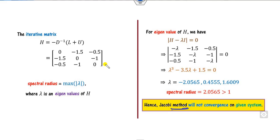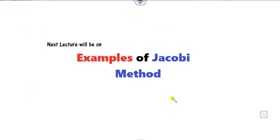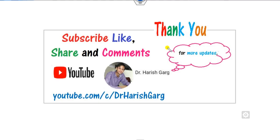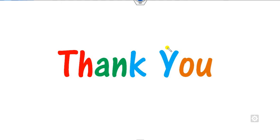This is the basic idea of the Jacobi method. Make sure to learn the concepts of diagonal dominance and spectral radius to understand this method. We will see the next lecture on various examples of the Jacobi method in detail. Till then, please like, share, and comment on the video. Best of luck, students!